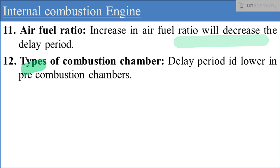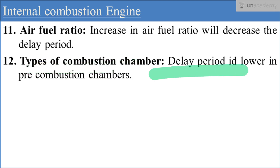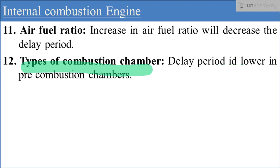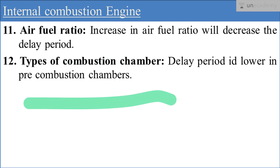Next is types of combustion chamber. The delay period is always lower in a pre-combustion chamber. I will discuss the combustion chamber conditions and how combustion chamber type affects the delay period in a later lecture on types of combustion chambers. This was all about the variables which affect the delay period during combustion in compression ignition engine.